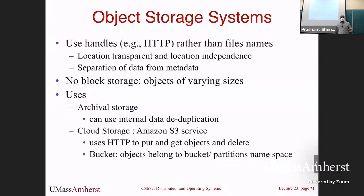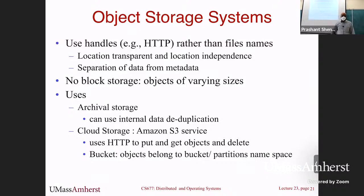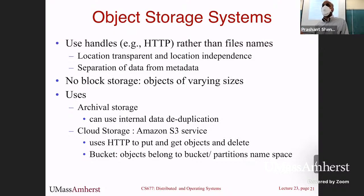Some similar concepts apply — separation of data from metadata, location transparency, and so on. One example of an object storage system you may have used is S3 on Amazon. In that case, the handles are actually URLs; every object is given a URL name and you do gets and puts using that name. S3 stands for Simple Storage Service — it uses HTTP to do gets, puts, and deletes. There's this notion of a bucket, which is the object, and the URL is the namespace. Internally, it also uses replication — objects by default are replicated three times, in many cases across data centers. So even if an entire data center goes down, your data is still at some other location — geographic replication.